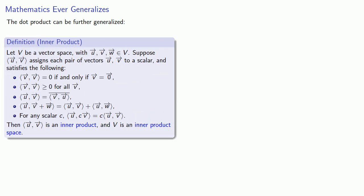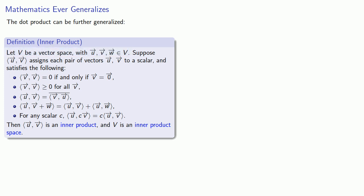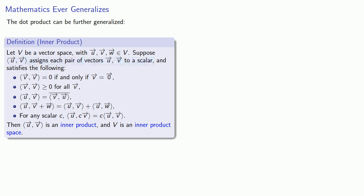Let V be a vector space, where u, v, and w are all vectors in V. Suppose this inner product ⟨u, v⟩ assigns each pair of vectors u and v to a scalar, and satisfies the following properties.